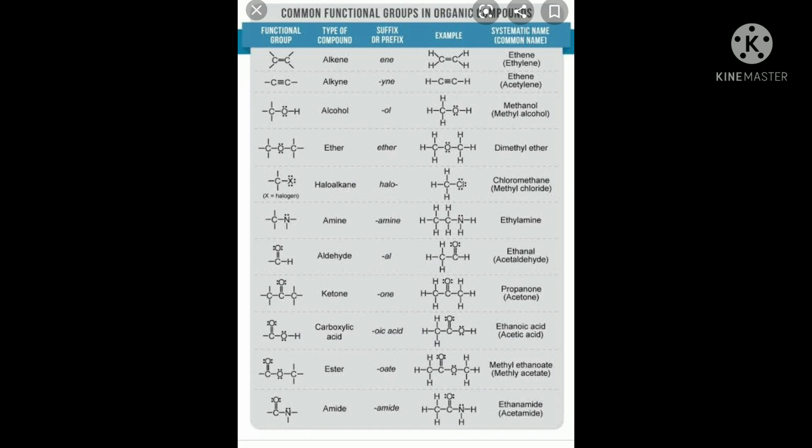Example: CH3OH is methanol. For halogens (CX), where X = Cl, Br, or I, the prefix used is chloro, bromo, or iodo respectively. Example: chloromethane.